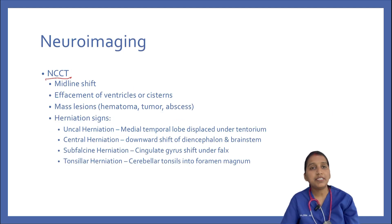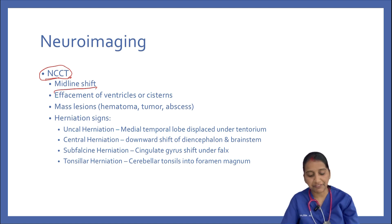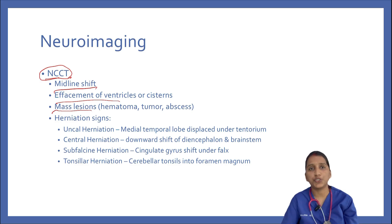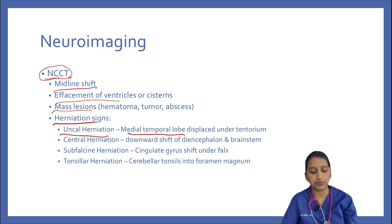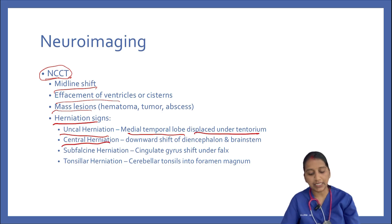Coming to neuroimaging, we perform a non-contrast CT which plays a very important role in the emergency room. We look for midline shift, effacement of ventricles or cisterns, and mass lesions like hematoma, tumors, or abscess. For herniation signs: in uncal herniation, we look for the medial temporal lobe displaced under the tentorium; in central herniation, there is downward shift of the diencephalon and brainstem.